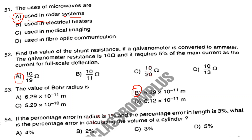For question 54, the options are: Option A: 4%, Option B: 2%, Option C and Option D also listed. The answer is Option D.